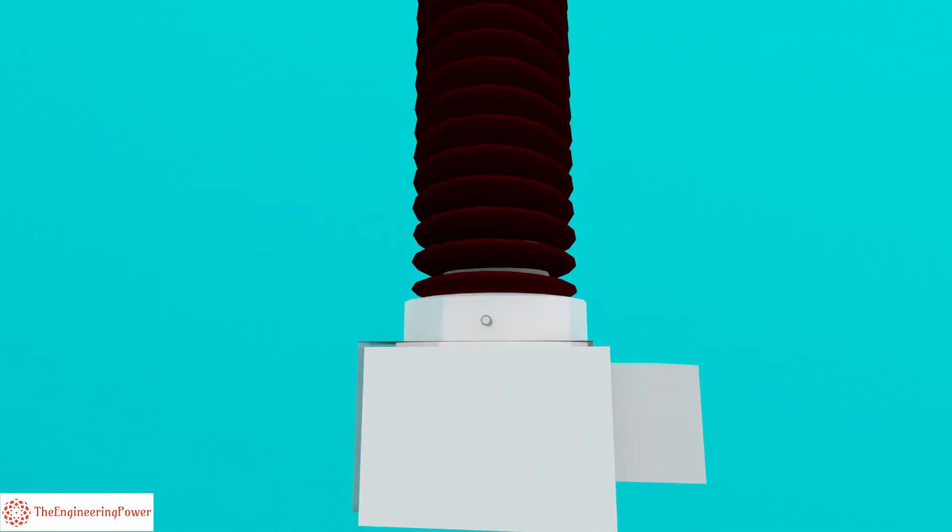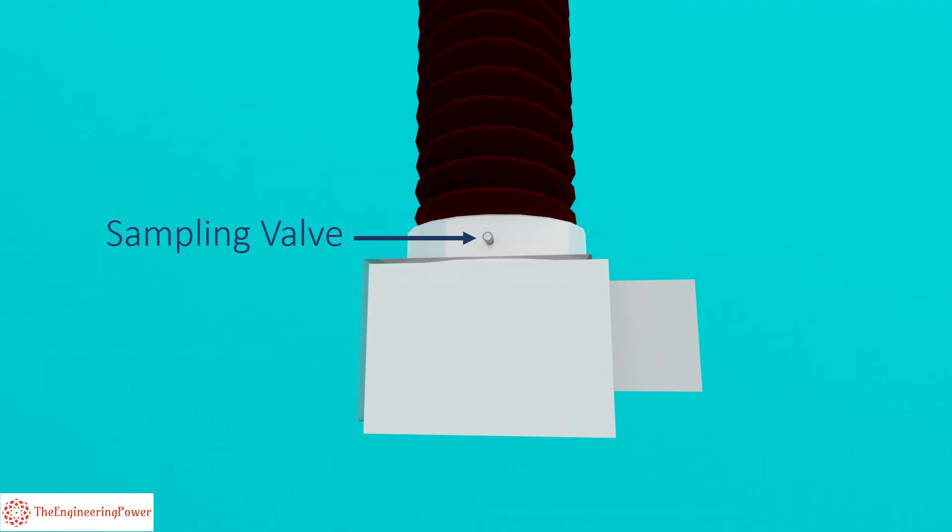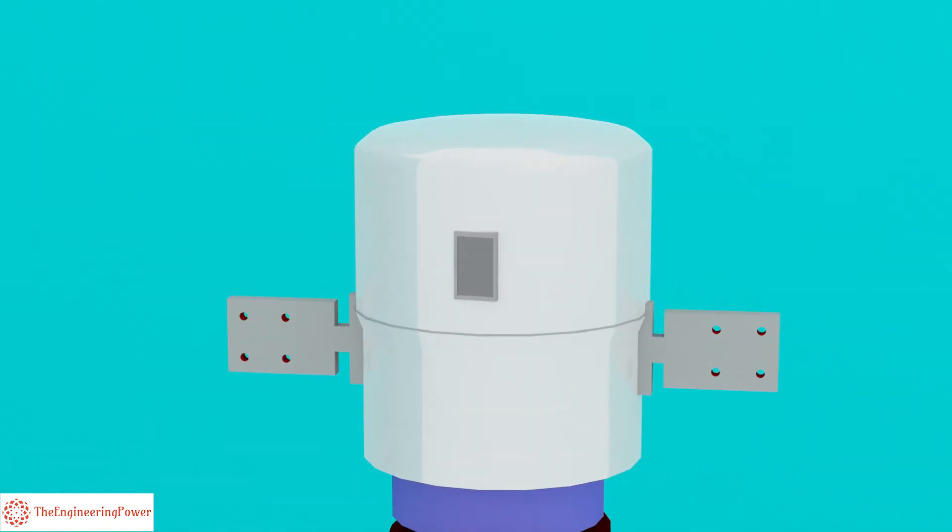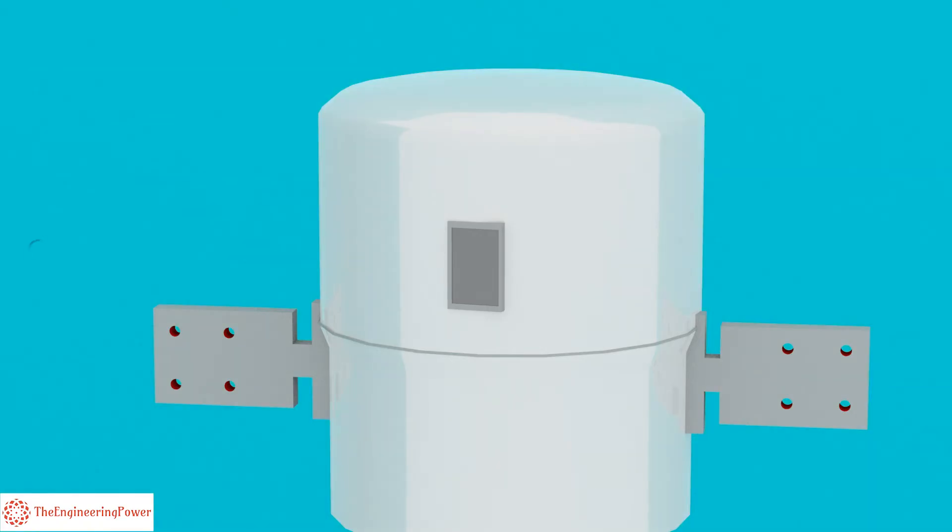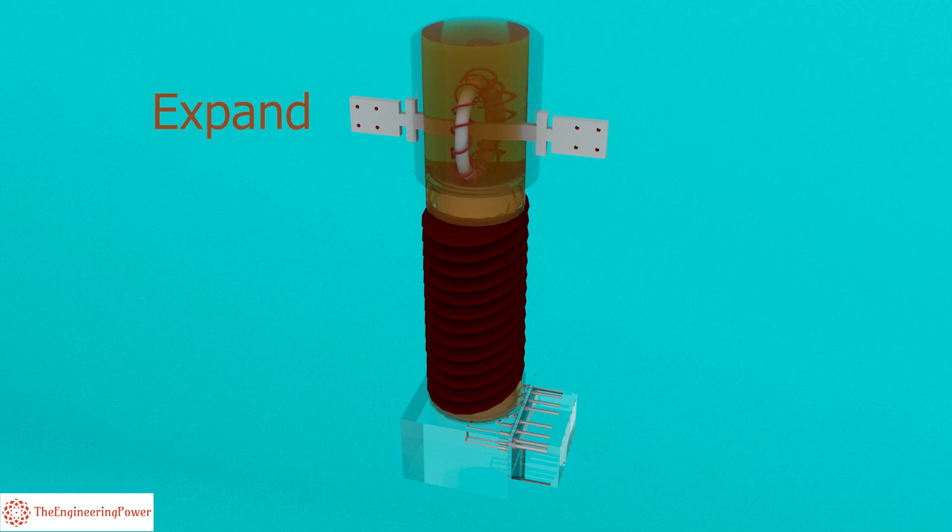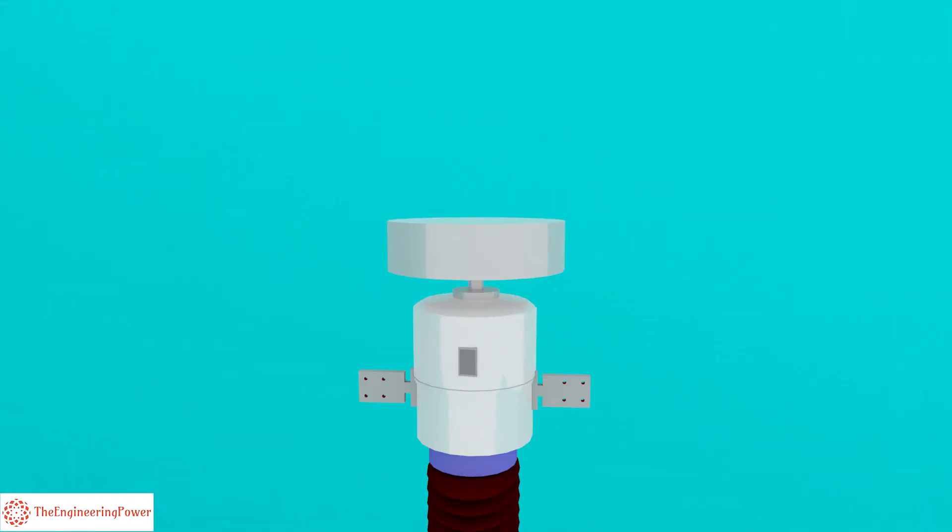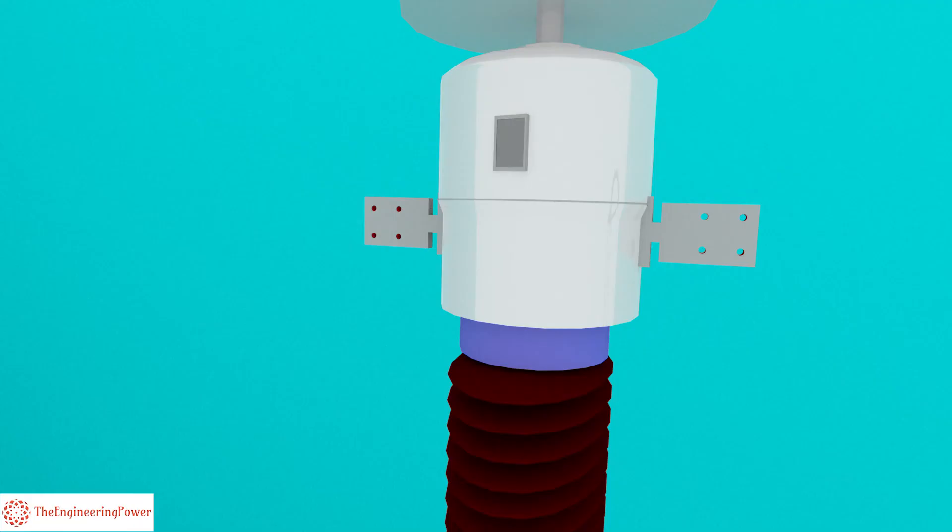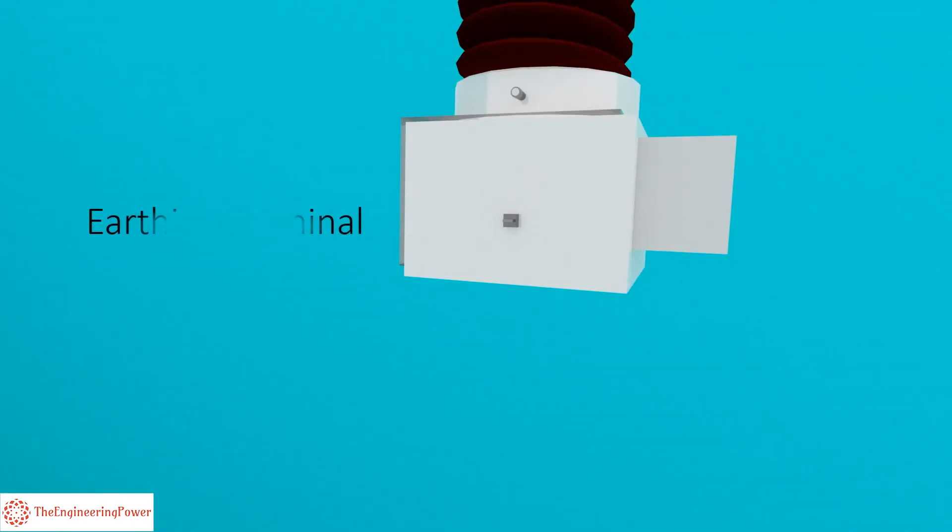The oil samples are taken from the sampling valve provided at the bottom of the CT. The level of the oil is checked through a transparent window provided at the top compartment of the CT, referred to as oil level indicator. The oil can expand and contract depending upon the temperature and load conditions. For accommodation of the expansion of oil, an extra volume compartment is provided at the top. An earth terminal is provided at the bottom for earthing of the CT body for safety purpose.